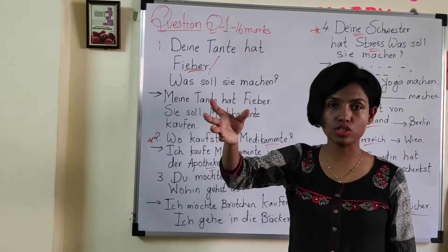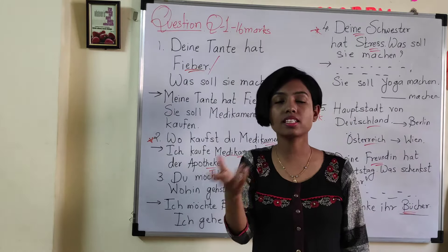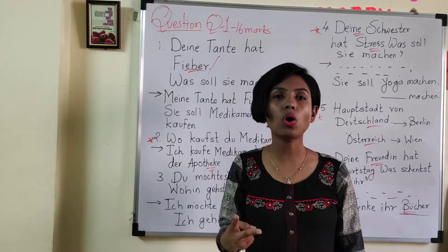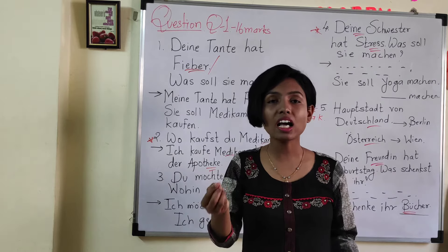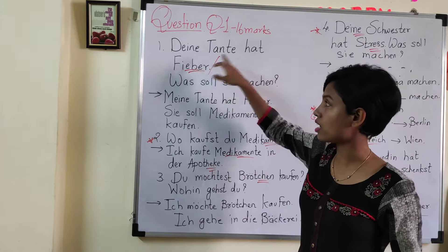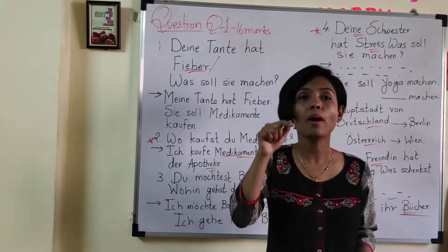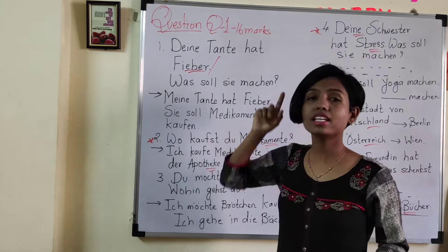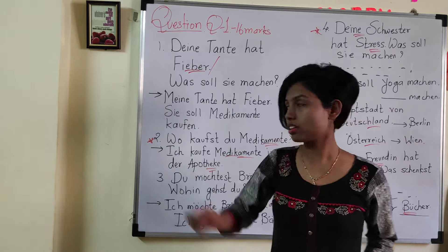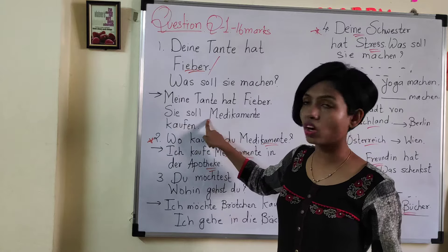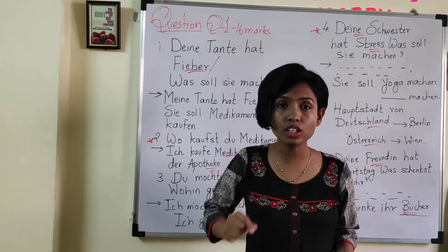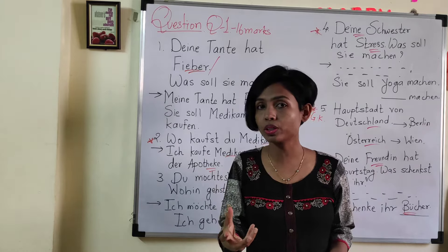One more thing can change. As I told you, it was Tante, but it can also be a male person. Please mention in your notes: Onkel — O-N-K-E-L — or Bruder — B-R-U-D-E-R. So brother can also come. If it is Dein Bruder hat Fieber, the answer will be Mein Bruder hat Fieber. And then instead of sie, since Bruder is masculine, it will be er — he. So: er soll Medikamente kaufen. Please repeat the video, listen to it, and write everything in your notes.